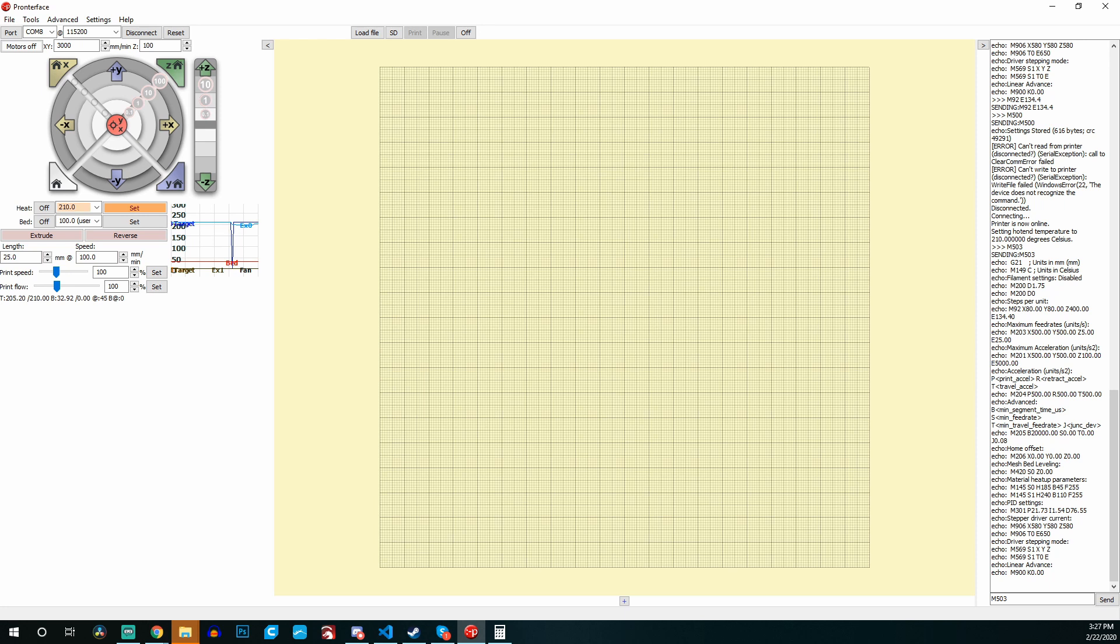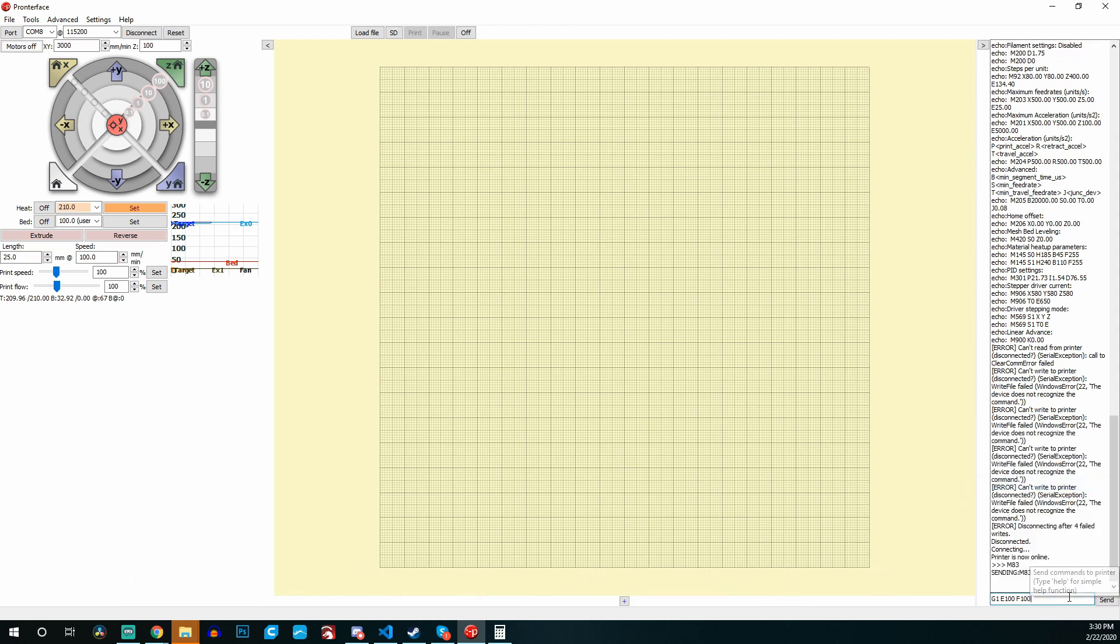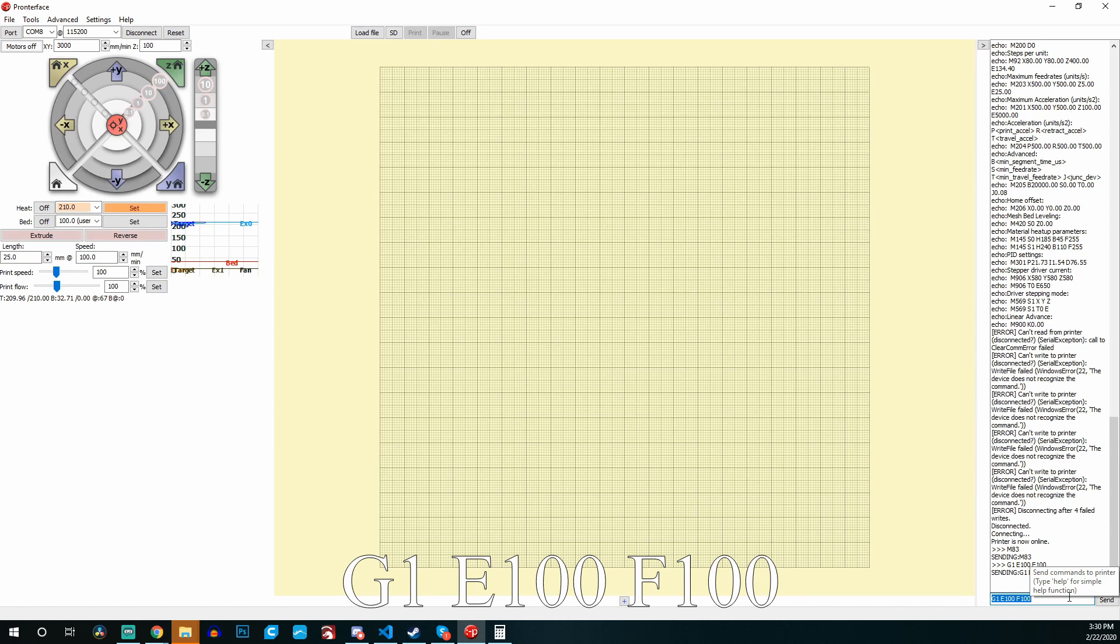Once again, we're sending over that M83 command and we're going to extrude another 100 millimeters of filament. In this case, now that we've updated the e-steps, it should be at the value we're expecting and there should be right around 20 millimeters left over.